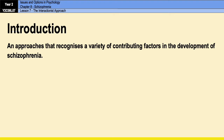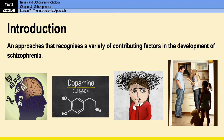The interactionist approach is a bit different because it suggests that there are many contributing factors to the development of the condition. These could be biological, social, and psychological. For example, biological factors could be genetic vulnerabilities or neurochemical imbalances like the dopamine hypothesis, whereas psychological factors could include stress caused by major life events or daily hassles, or dysfunctional family life.